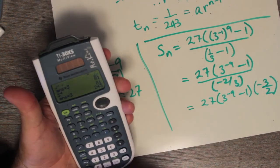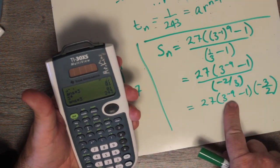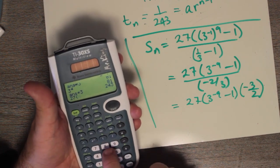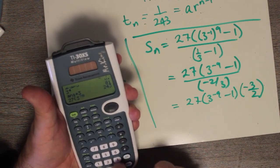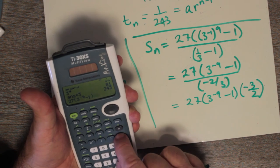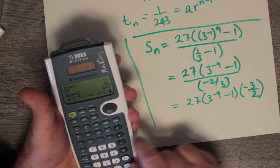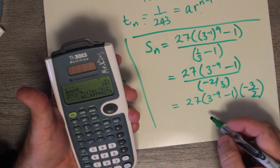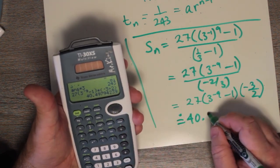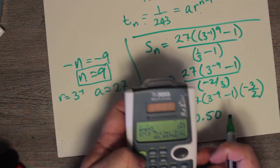So, we can work that out on a calculator. It would be nice if this was an exact answer, but that 3 to the minus 9 is going to mess things up in terms of an exact answer. So, we'll go 27 times 3 to the power of negative 9 minus 1, in brackets, multiplied by, in brackets, negative 3 over 2. And we get 40, approximately 40. The 7 rounds the 9 to a 0 and carries the 1. So, 40.50 would be the approximate sum to one decimal place.